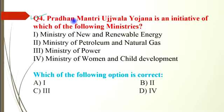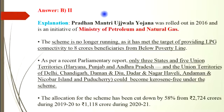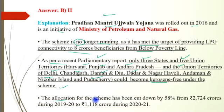Question number 4: Pradhan Mantri Ujjwala Yojana is an initiative of which ministry? The correct answer is the Ministry of Petroleum and Natural Gas, option B. This Yojana was rolled out in 2016. The scheme is no longer running as it has met its target of providing LPG connections to 8 crore beneficiaries from below the poverty line. As per a recent parliamentary report, only three states and five union territories — Haryana, Punjab, Andhra Pradesh, Delhi, Chandigarh, Daman and Diu, Dadra and Nagar Haveli, Andaman and Nicobar, and Pondicherry — became kerosene-free under the scheme. Allocation for the scheme has been cut by 58% this year compared to last year.